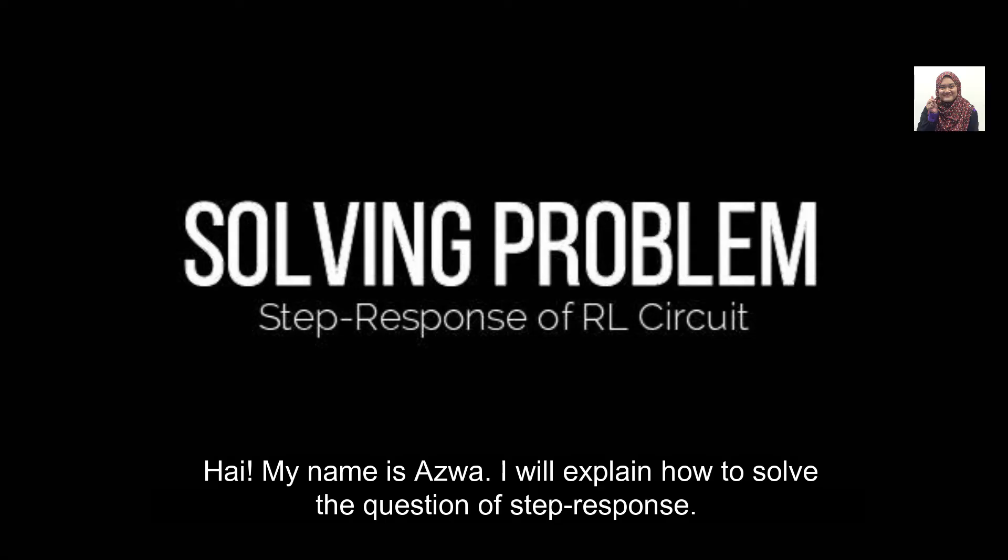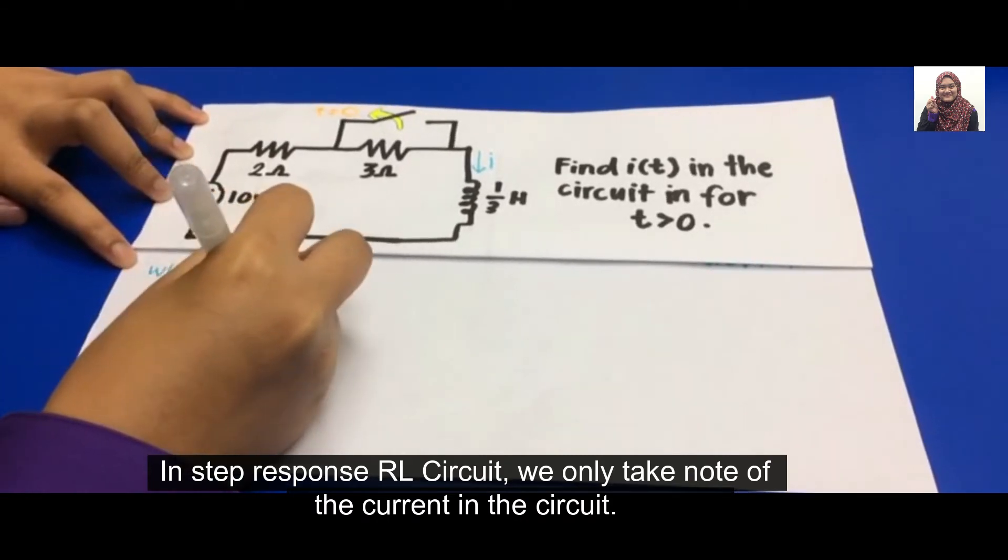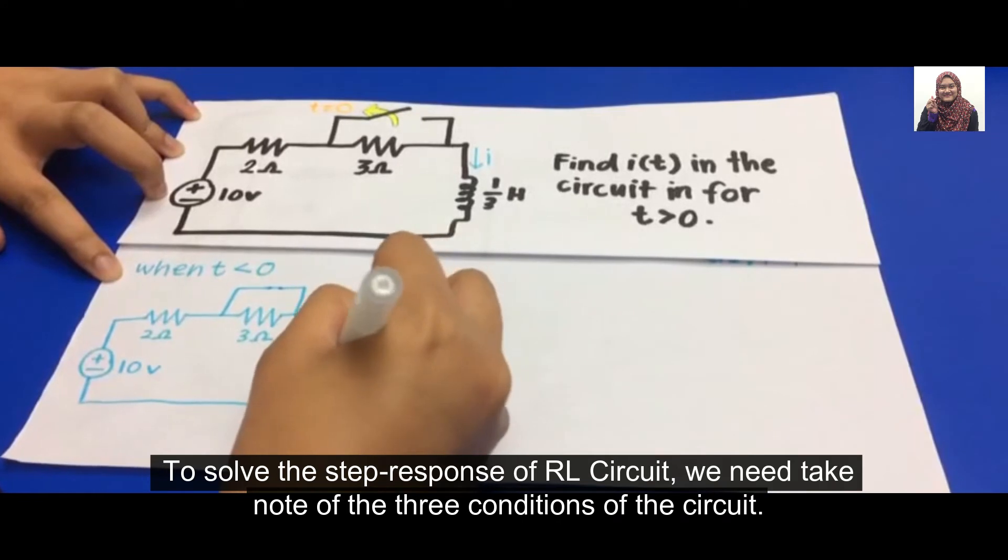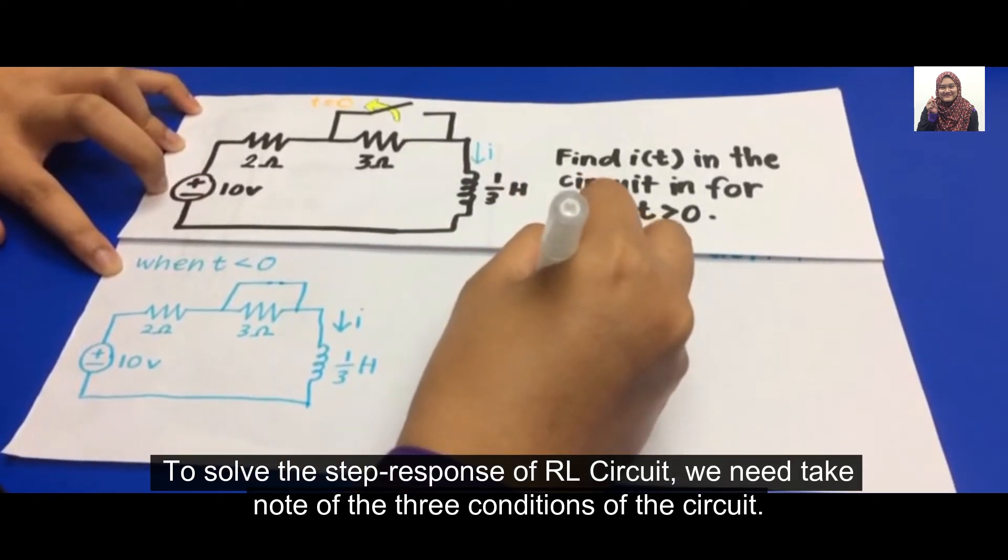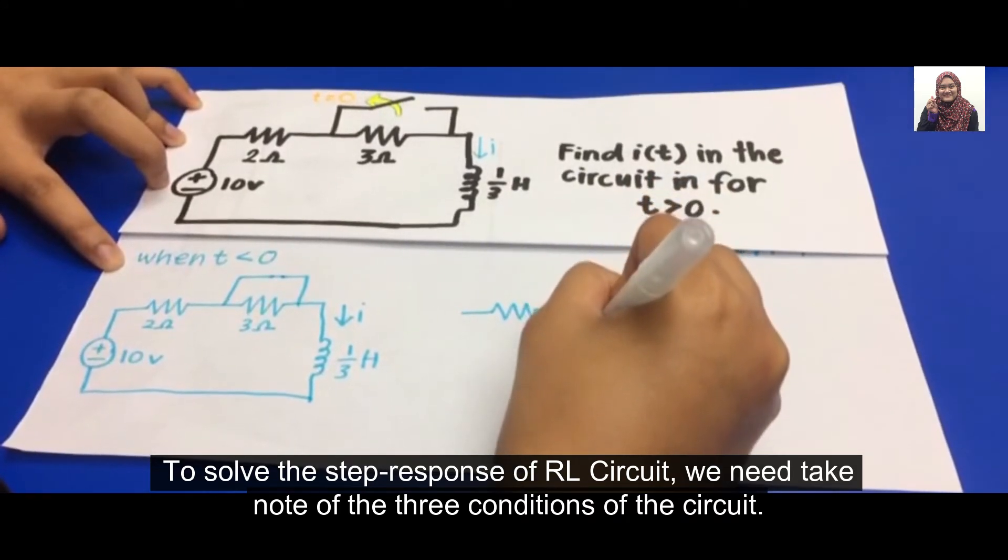Hi, my name is Azwar. I will explain how to solve the question for step response of RL circuit. In step response RL circuit, we only take note of the current in the circuit. To solve the step response of RL circuit, we need to take note of the three conditions of the circuit.